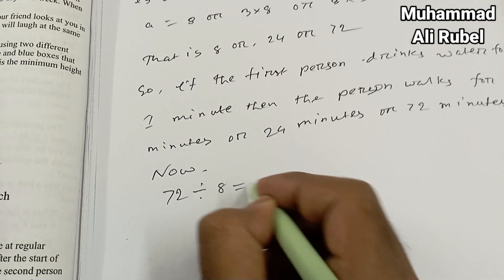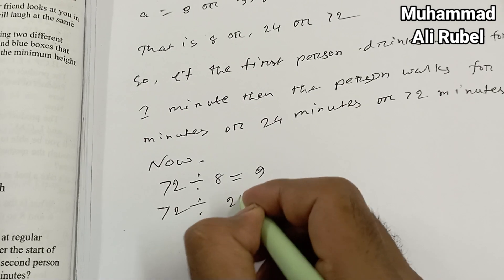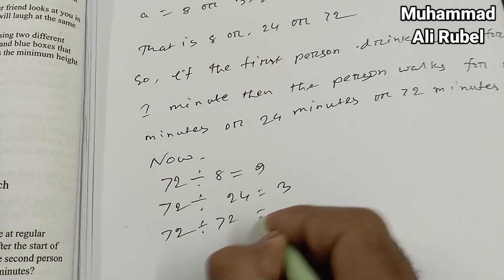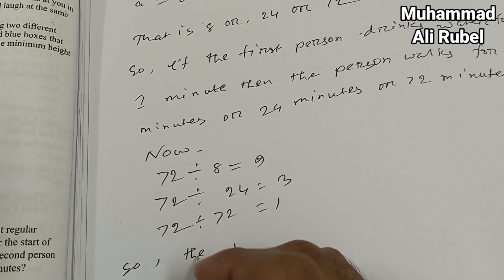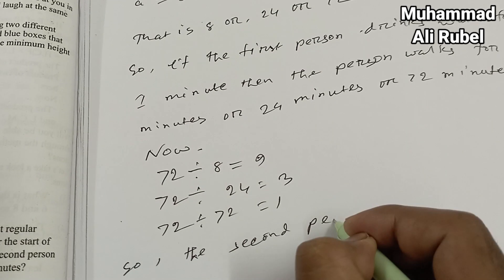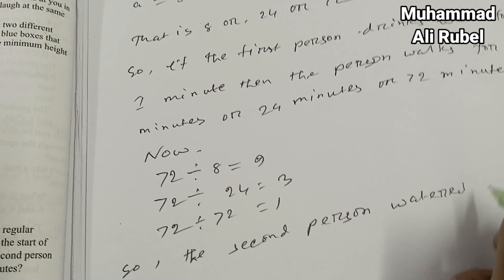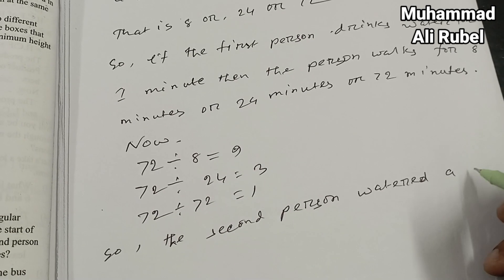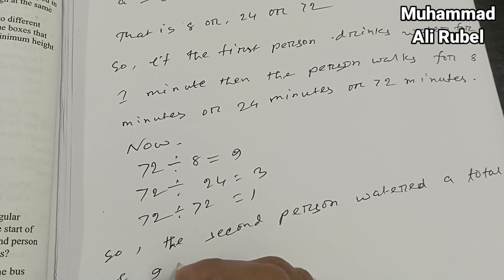Now, 72 divided by 8 equals 9. 72 divided by 24 equals 3. 72 divided by 72 equals 1. So the second person watered a total of 9 times.